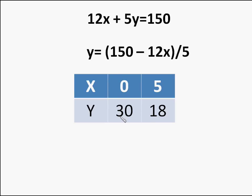So we take 12x on the other side. It becomes 5y equal to 150 minus 12x. So y equal to 150 minus 12x by 5.